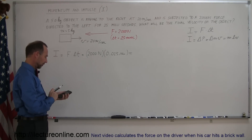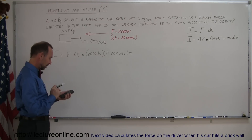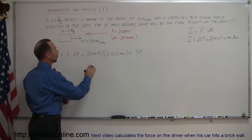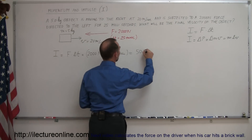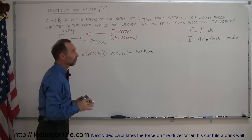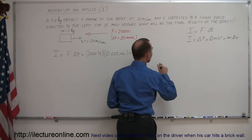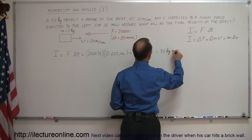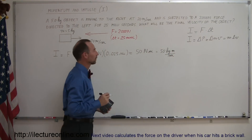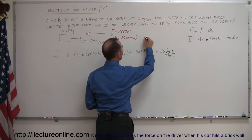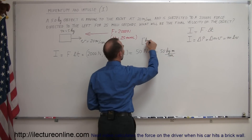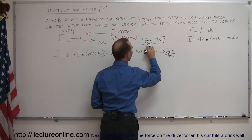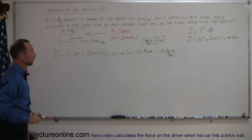Here's my calculator: 2,000 times 0.025 equals 50. So we get an impulse of 50. Since impulse has units of newtons times seconds, this will be 50 newton-seconds, which can also be converted to units of momentum — kilograms meters per second. Remember that newtons is kilograms meters per second squared, and if you multiply that times seconds, you get the same units as momentum.